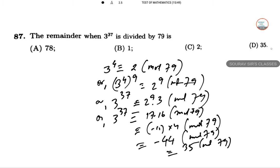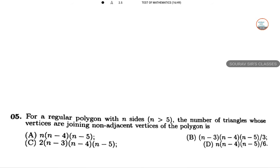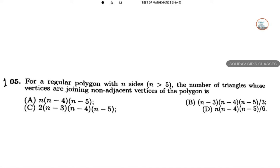Hence this will leave a remainder of 35 by modular arithmetic. This is actually problem 105. For a regular polygon with n sides where n is greater than 5, the number of triangles whose vertices are...